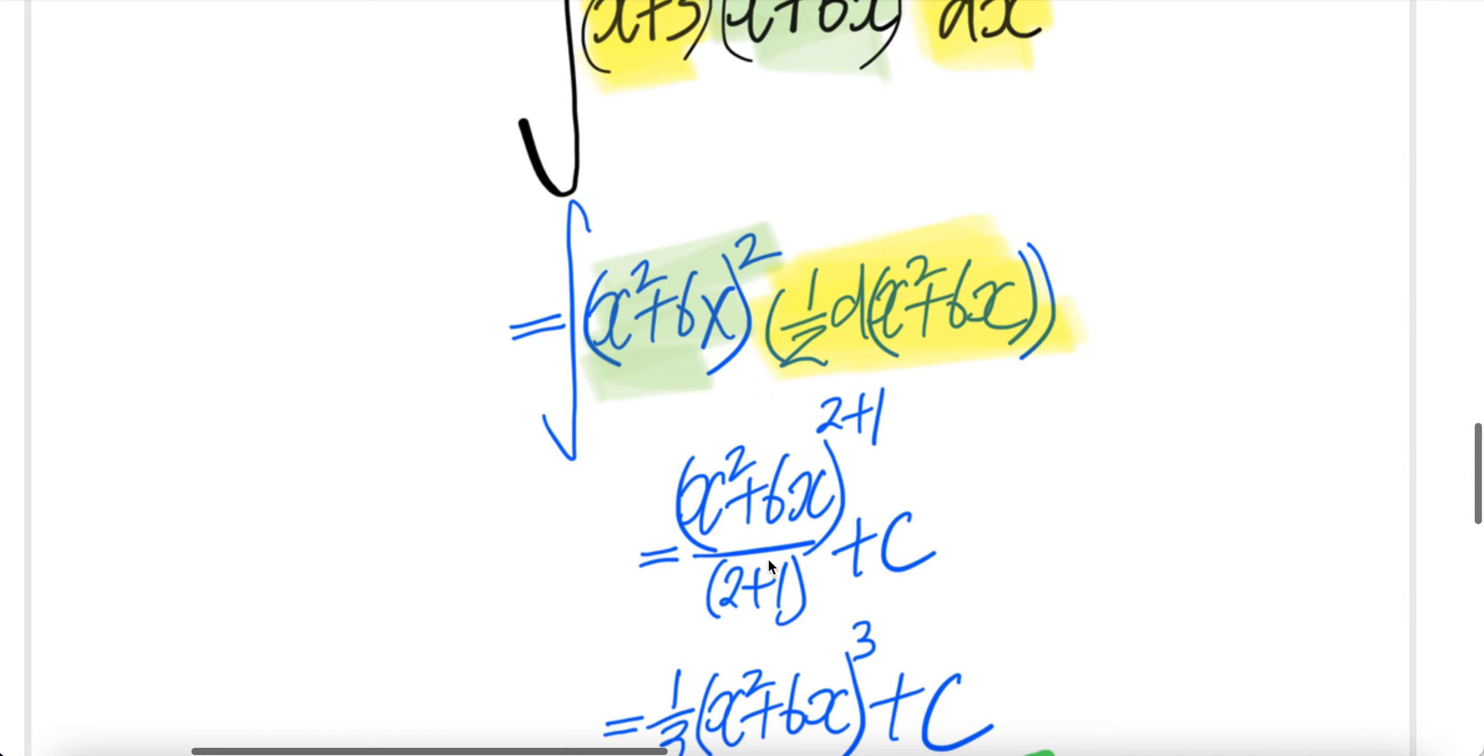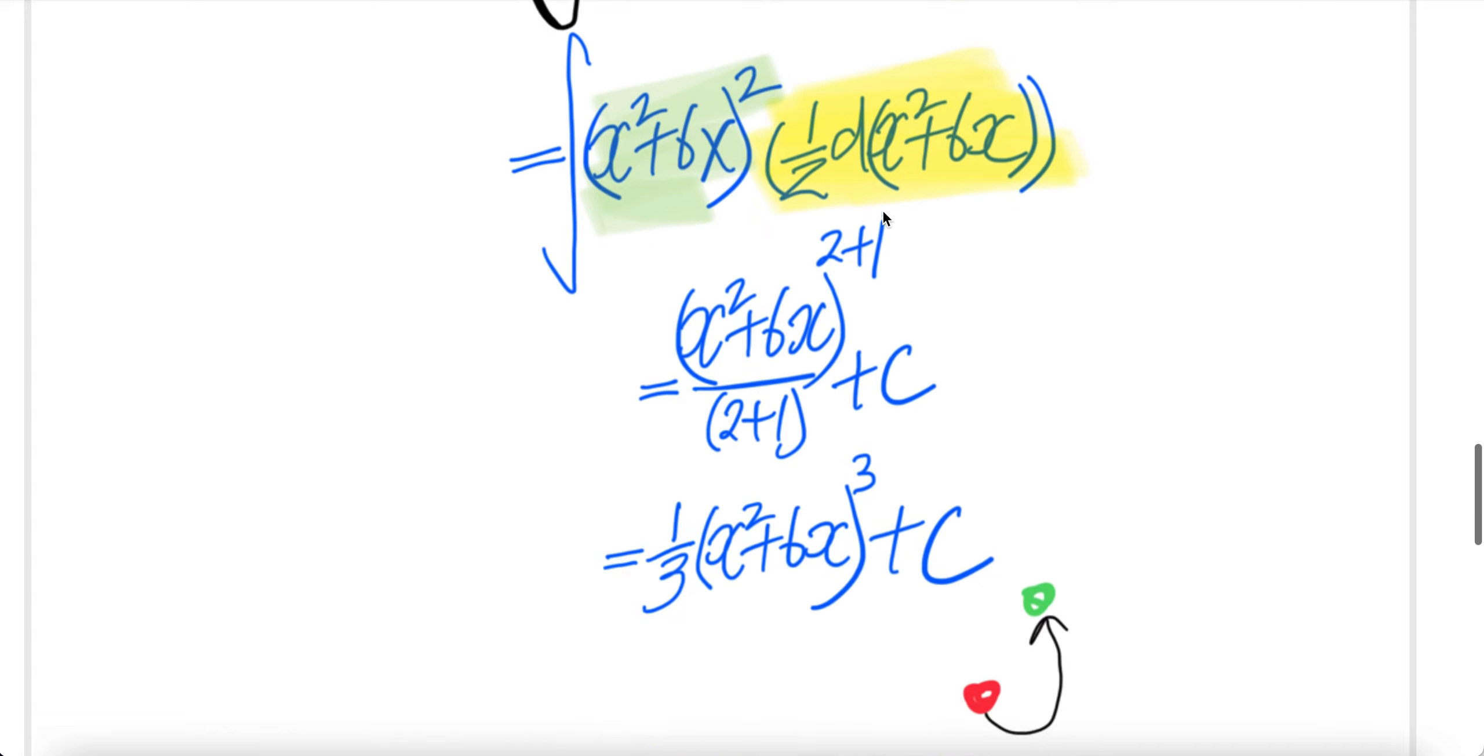2 plus 1 over 2 plus 1. Remember there's a half here. Forgot to add this half out. There's a half times this piece. So 2 plus 1 is 3 upstairs, 3 downstairs. So it'll be half times 1 third is 1 sixth.